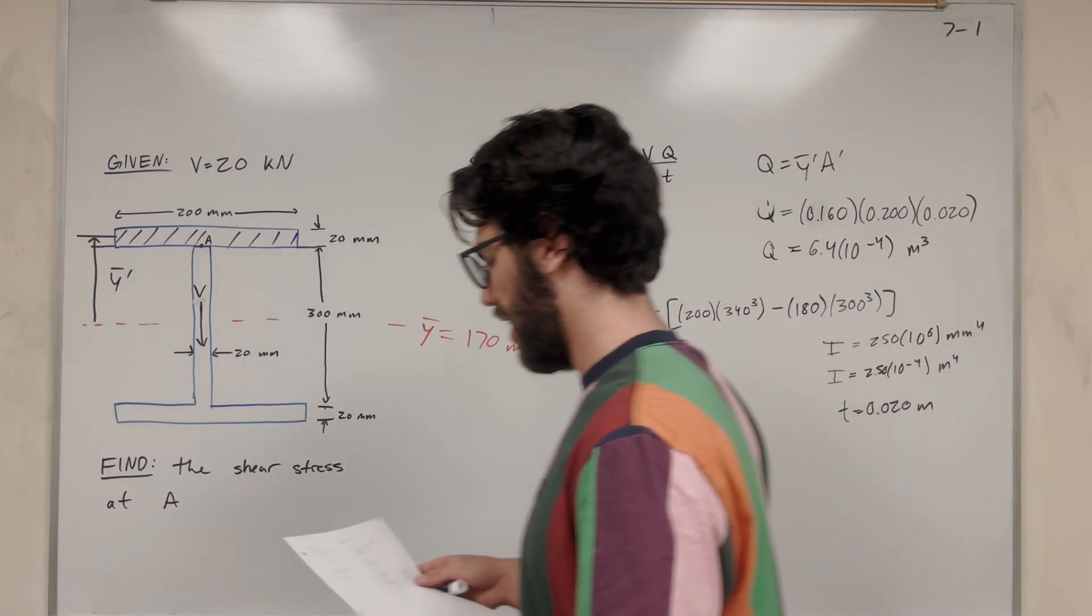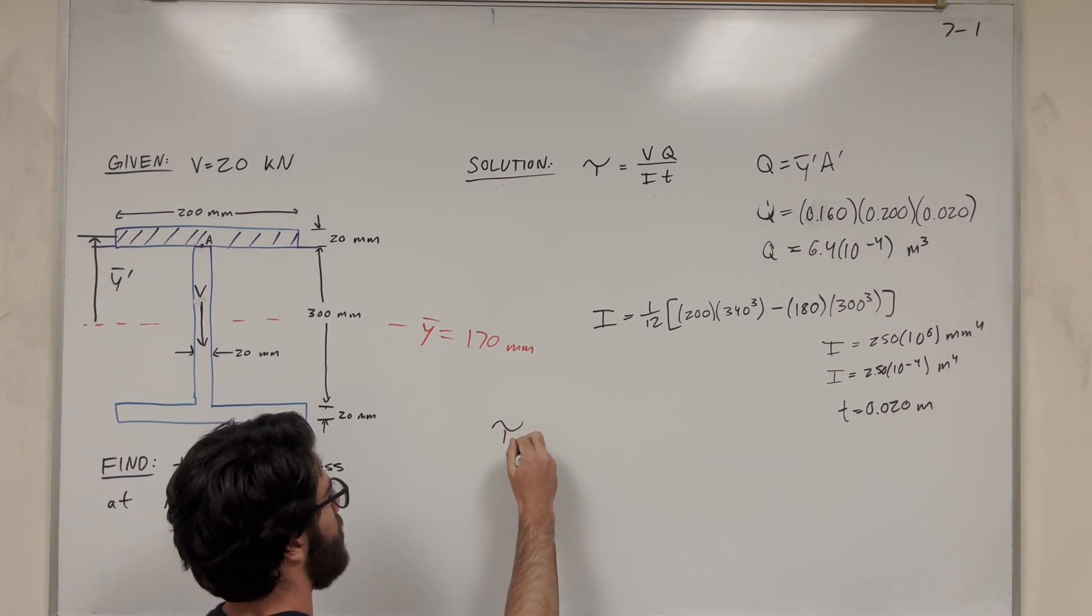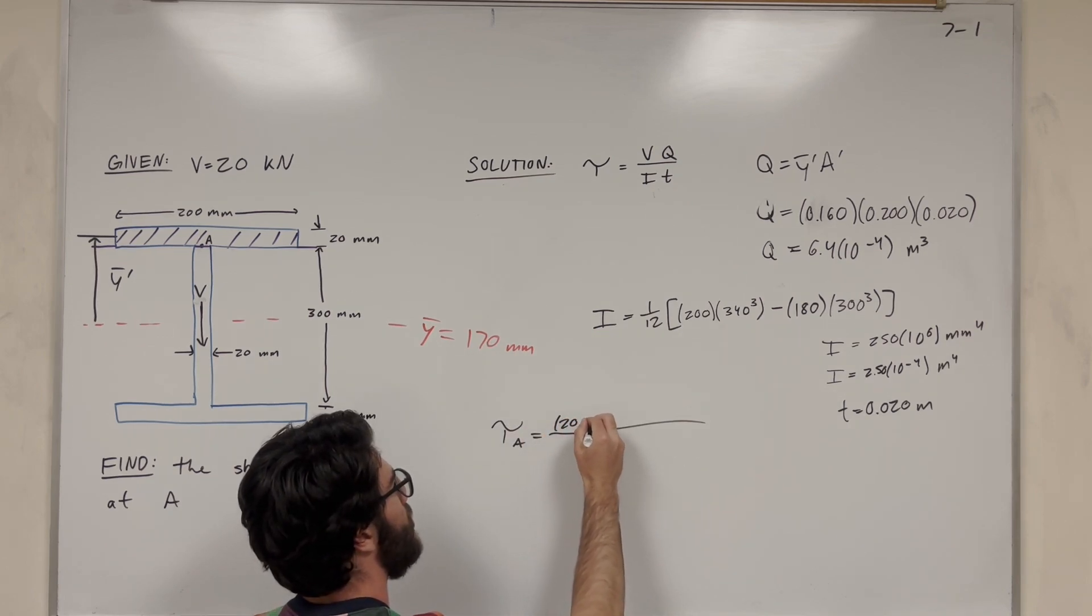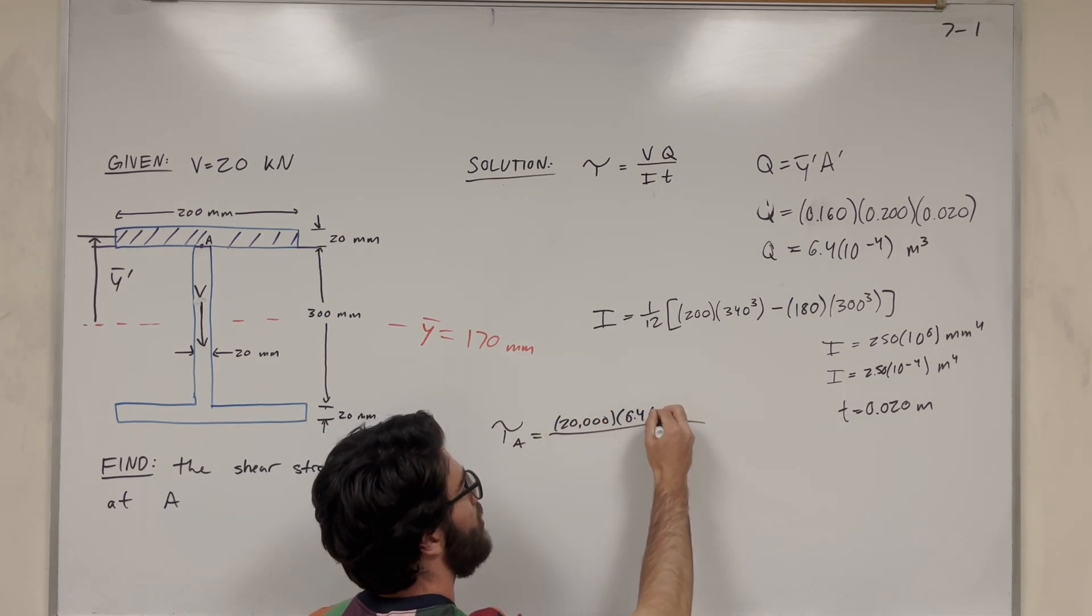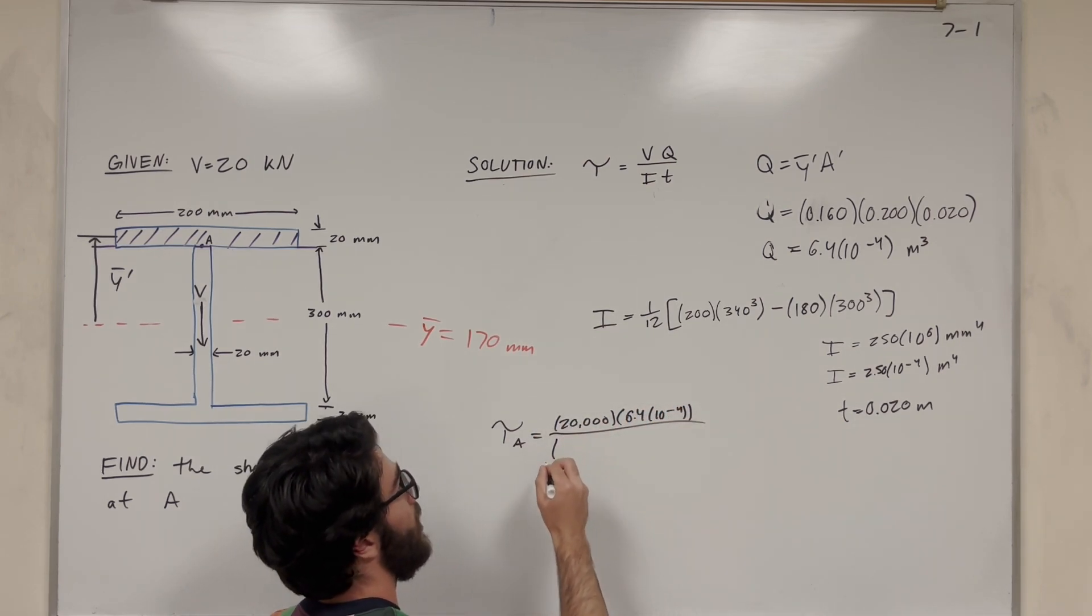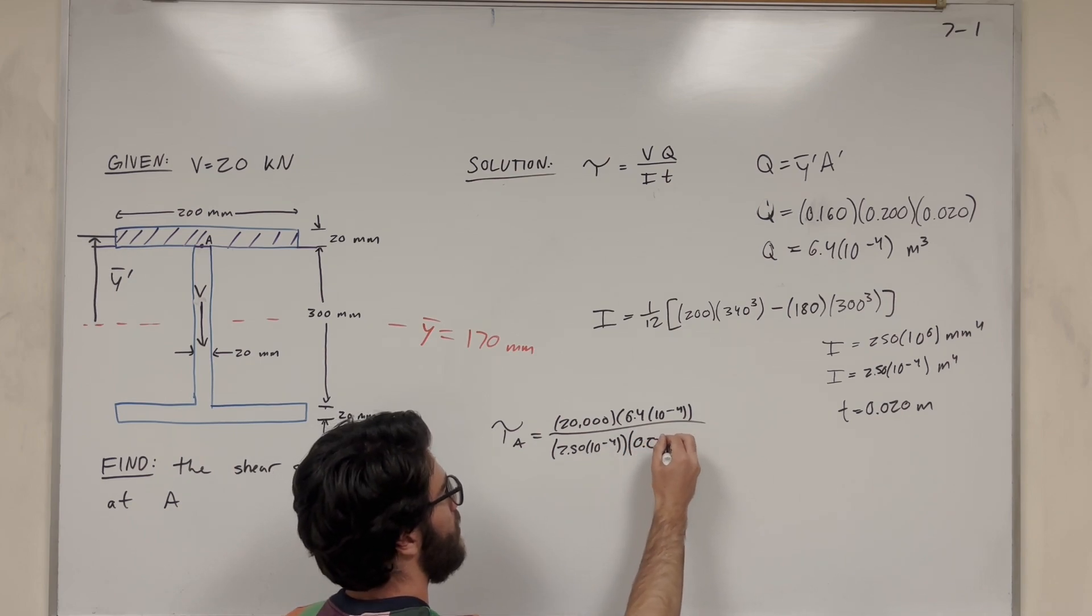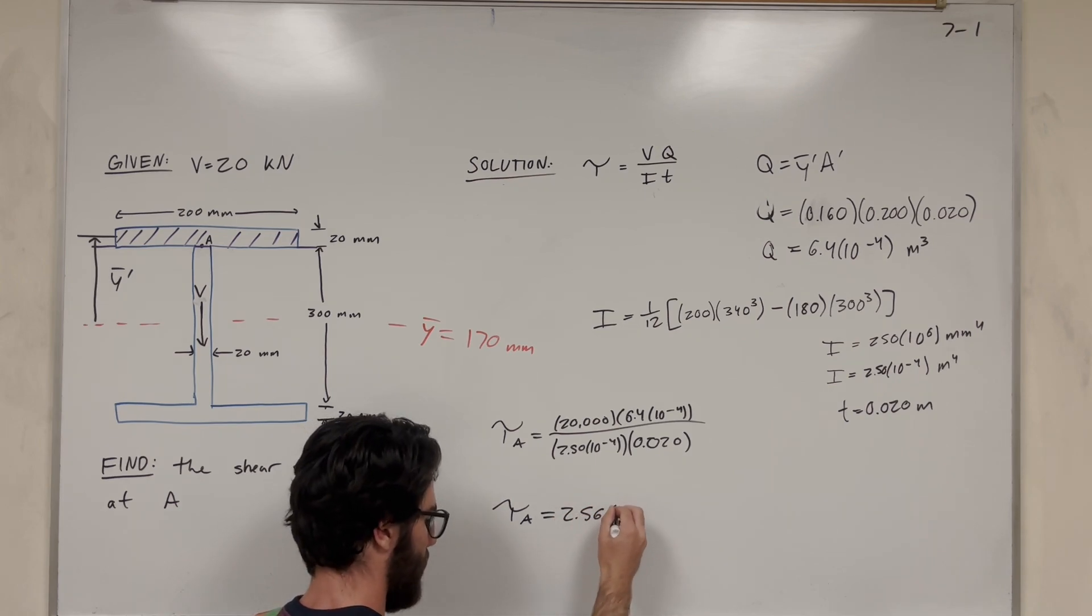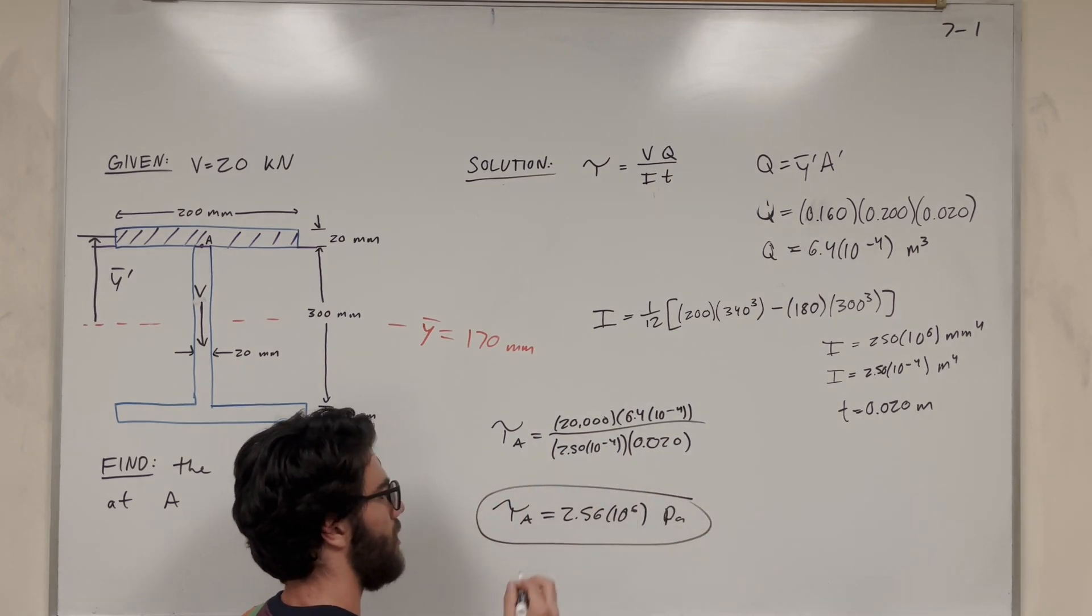Right, so now I have everything. We just have to put it together in an equation. Shear stress at A is equal to, first of all, the shear converted to newtons, so 20,000 newtons. Then we have Q, which we found as 6.4 times 10 to the negative fourth. Then I is 2.50 times 10 to the negative fourth. And then T is 0.020. And you're going to find that shear stress at A is equal to 2.56 times 10 to the 6 pascals.